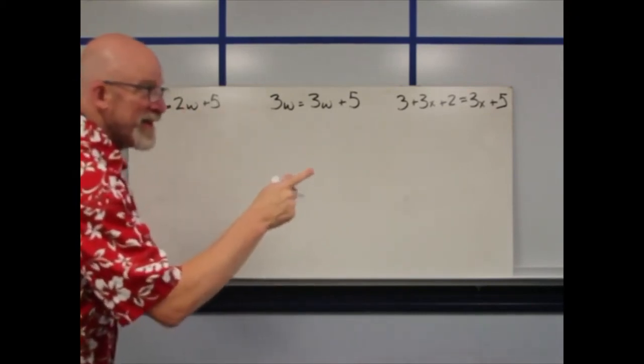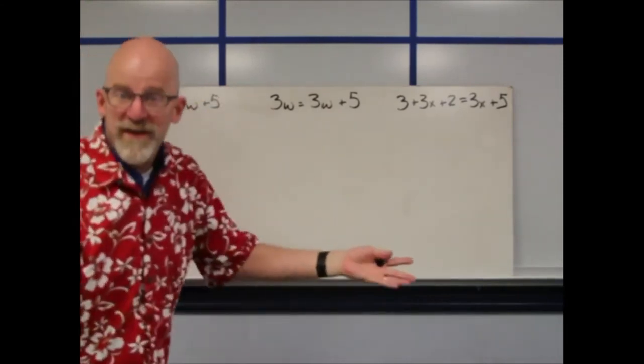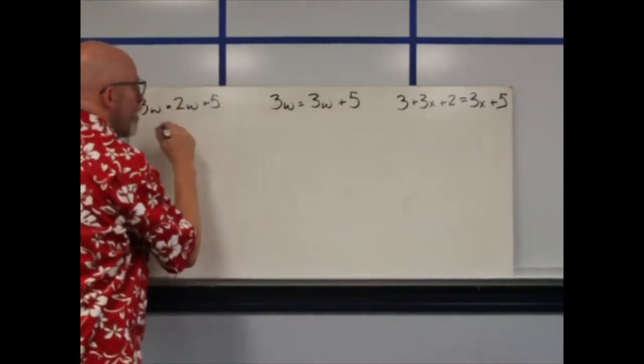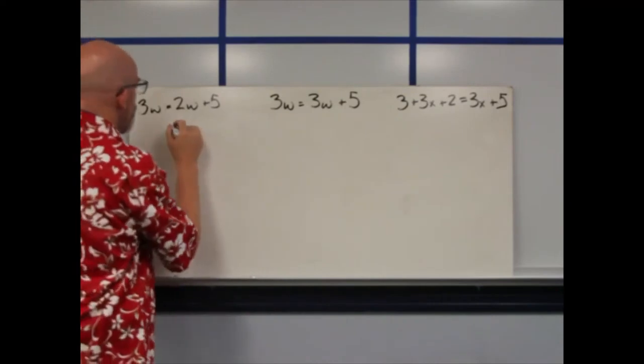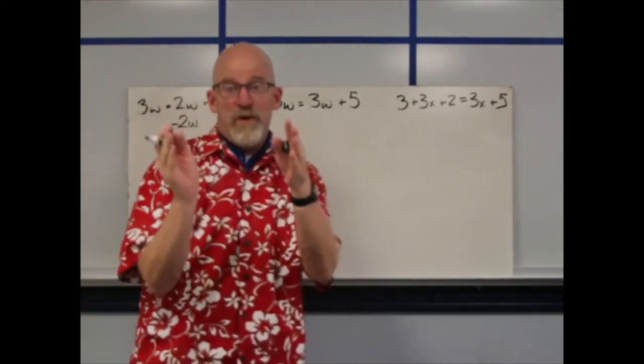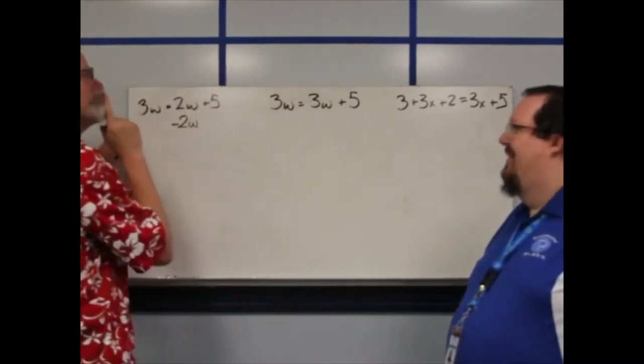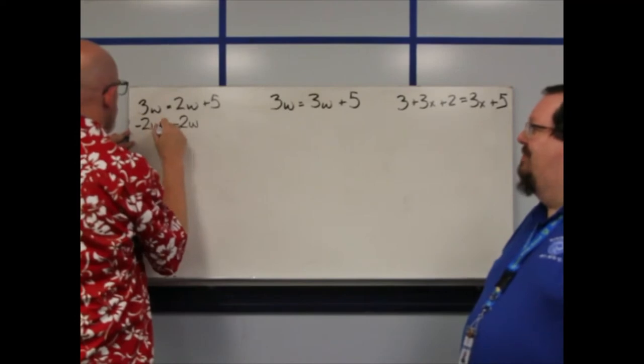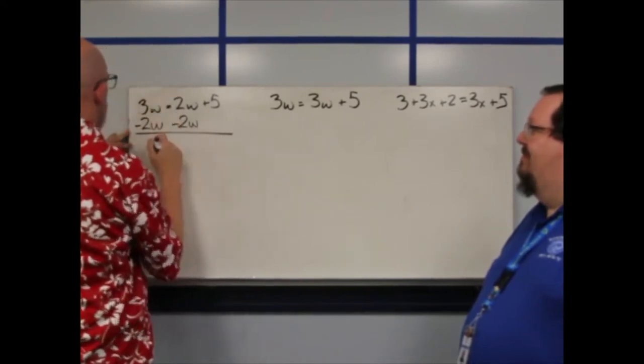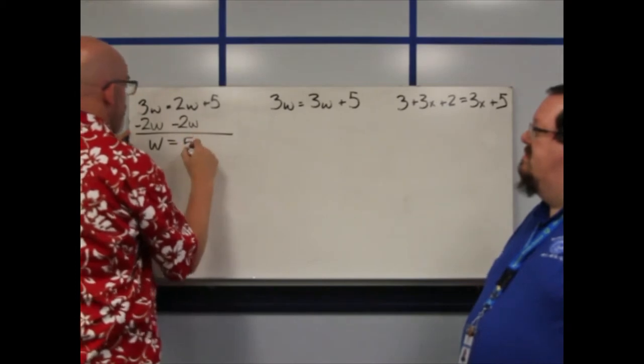Last time I did this, I got all my Widgets to one side and just numbers to the other. So I'm gonna subtract two, but what the boss always told us is what you do to one side, you have to do to the other. That leaves us with one Widget equals five.